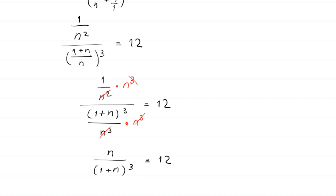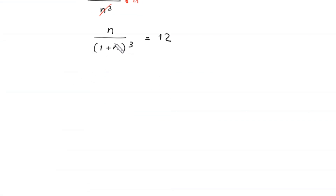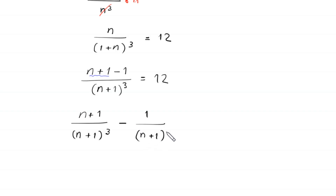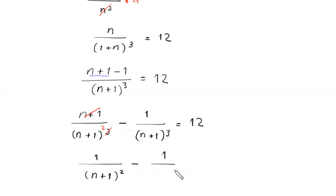Now we add and subtract 1 in the numerator, so this becomes (n + 1 − 1) divided by (n + 1)³ equals 12. We treat (n + 1) as a single term, splitting it as (n + 1)/(n + 1)³ minus 1/(n + 1)³ equals 12. Simplifying, this becomes 1/(n + 1)² minus 1/(n + 1)³ equals 12.